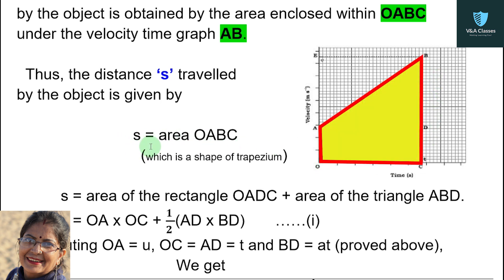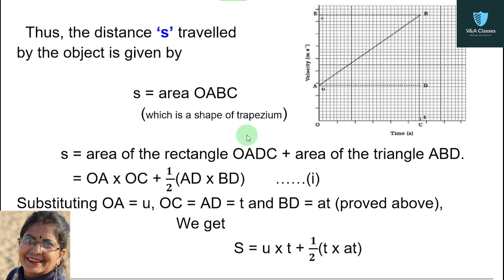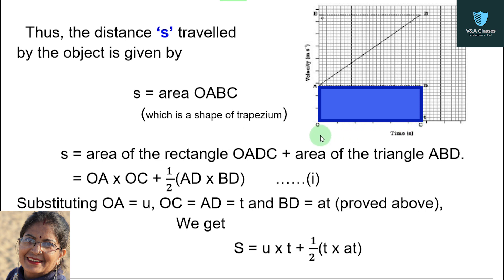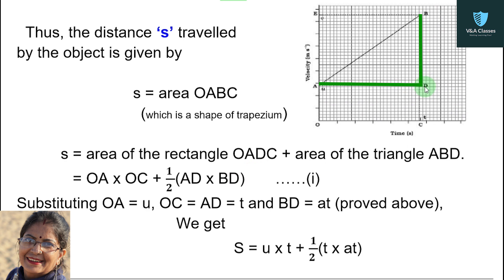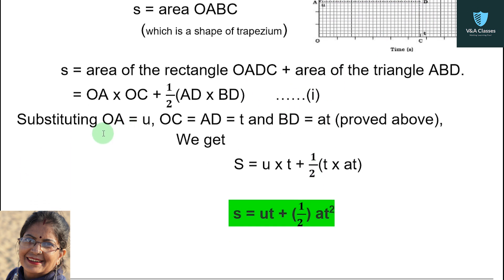S equals the area of trapezium O, A, B, C. So S equals area of rectangle O, A, D, C plus area of triangle A, B, D. Area of rectangle equals OA multiplied by OC — length times breadth. Plus, since there is a 90-degree angle, triangle ABD is a right-angled triangle, so its area is half into base (AD) multiplied by height (BD). This is taken as equation 1.